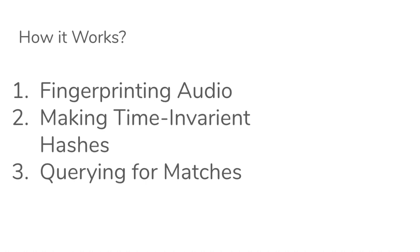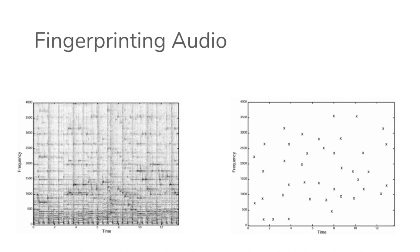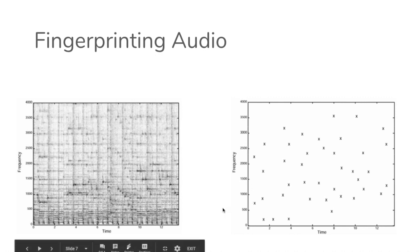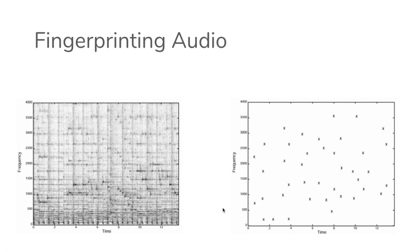There are three steps to how it works: first is fingerprinting the audio, second is making time-invariant hashes, and third is querying for matches. This is the spectrogram of a music song — frequency is on the y-axis and time on the x-axis. Fingerprinting from this spectrogram extracts all the key points of frequency with time, and the algorithm generates a unique fingerprint for each recording.